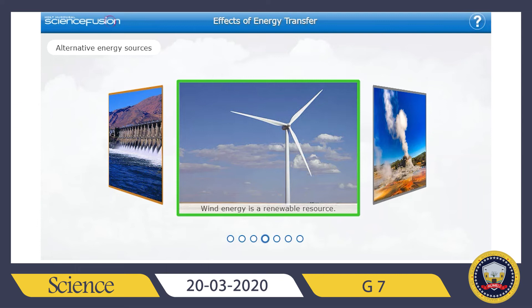Another problem with wind energy is that it causes a lot of noise, which can be disturbing for people living around the turbines. Also, wind energy can only be produced in certain areas where there is efficient wind available for generating this type of energy.